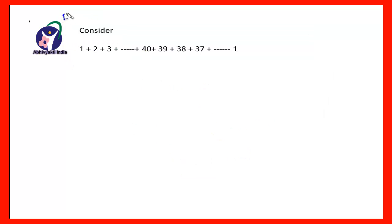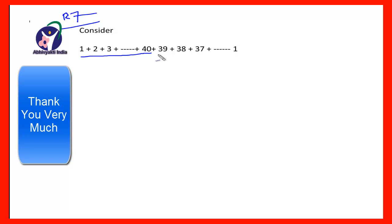Rule 7: consider the series 1 + 2 + 3 + ... up to 40, then the numbers decrease: 39 + 38 + 37 + ... + 1. We need to find the value of this sum.